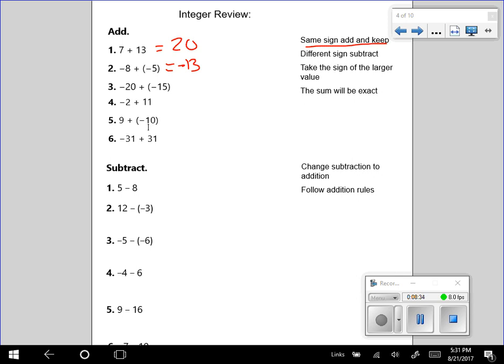I'm going to jump down to number 5 here. 9 plus negative 10. Now, I don't have same sign anymore. I have different sign. So my different sign says subtract. So I got 1. 10 minus 9 is 1. But now I have to figure out what my sign is going to be. Well, the larger value or the larger absolute value is negative. So I wrote the song over here. Same sign add and keep. Different signs subtract. Take the sign of the larger value. Your sum will be exact. I know I am a great singer.